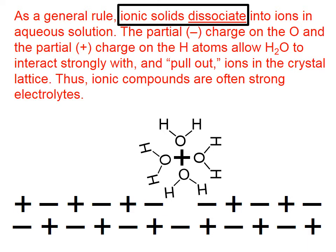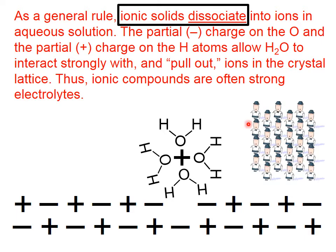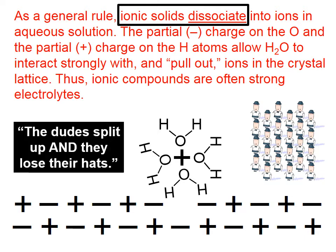This will happen for all of these different ions, except the anions that come out will have the hydrogens closest to them, whereas the cations will have the oxygen in the water molecules closest to them. I have a bunch of guys here, and they're all wearing hats. They represent the cations and anions — you can think of the dudes as representing the cations and the hats as their anions. Cation, anion, cation, anion, in this never-ending lattice.